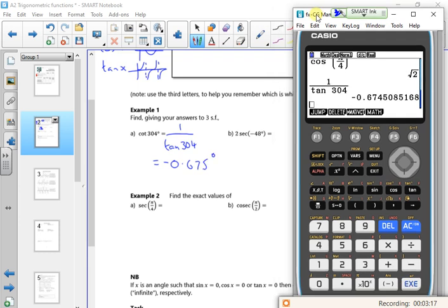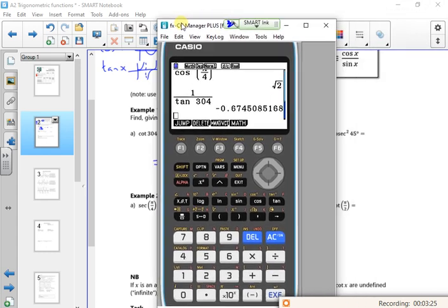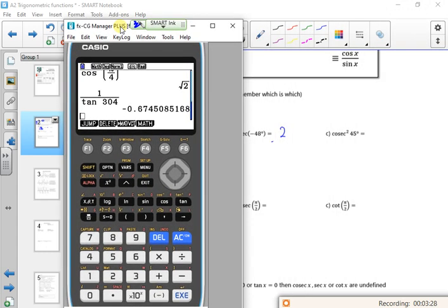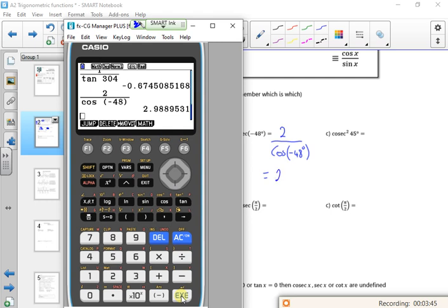So 2 lots of secant is the same as 2 lots of 1 over cos. So I've got 2 over cos of minus 48 degrees. So I've got fraction 2 over cos minus 48 degrees. So you just have to remember that we've got these extra bits here. And that's 2.99 degrees.